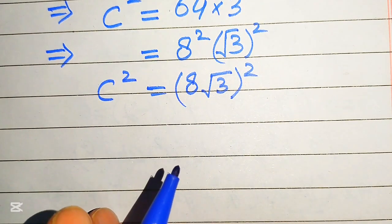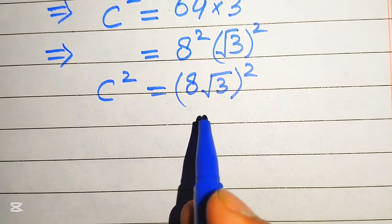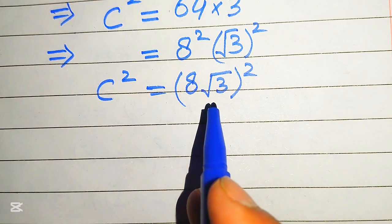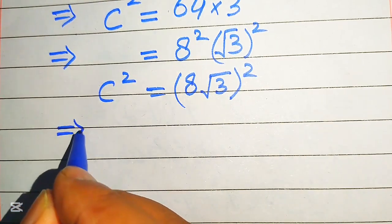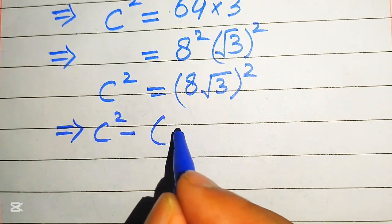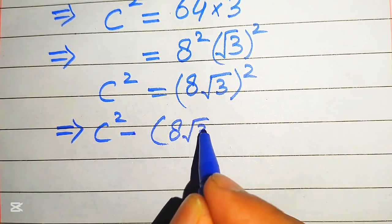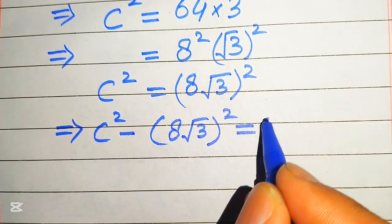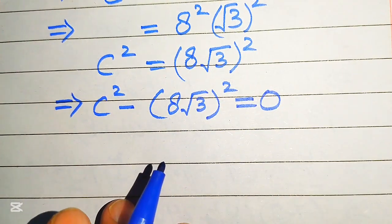To simplify further, we move the right-hand side to the left. This gives us c squared minus 8 times square root of 3, whole squared, equals 0.